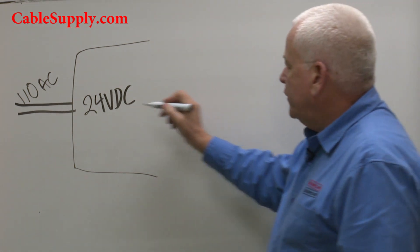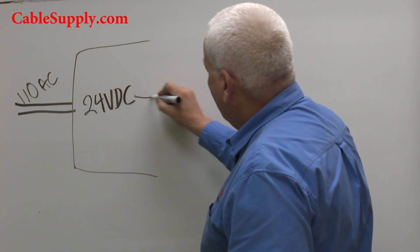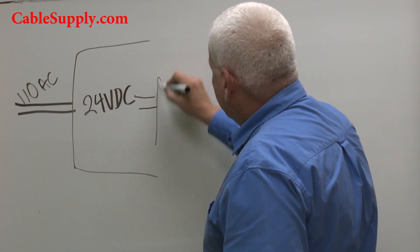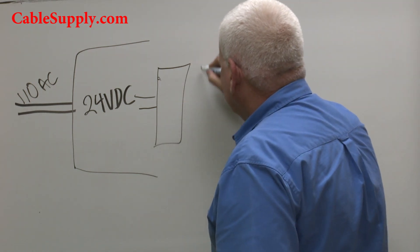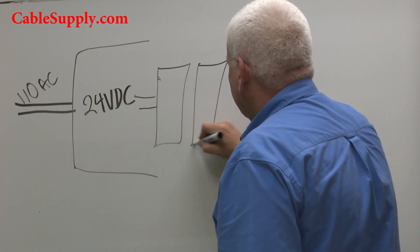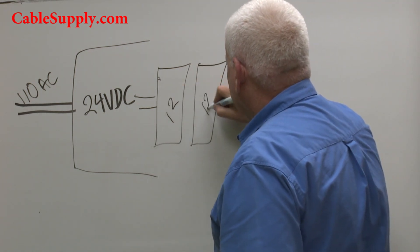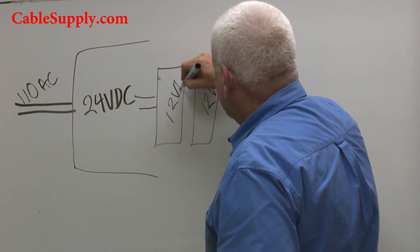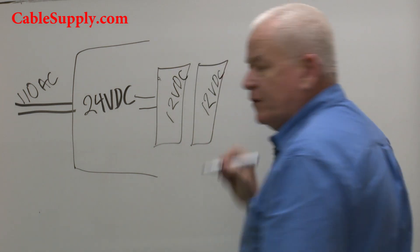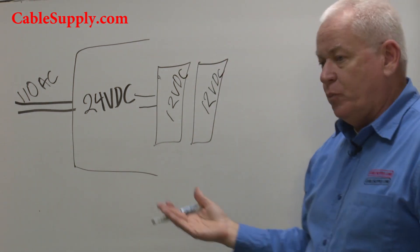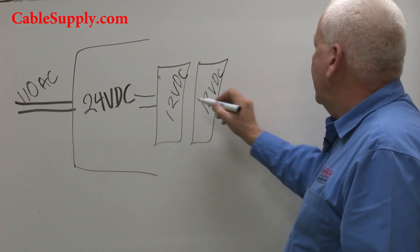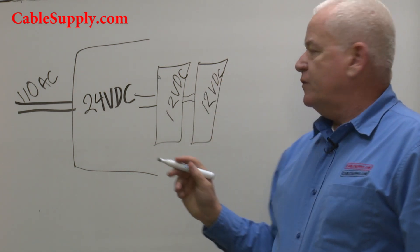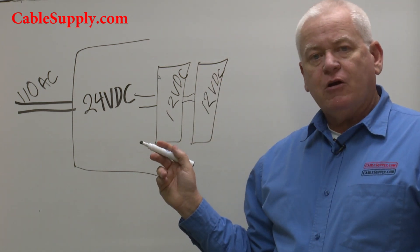Once it converts that, that 24 volts comes out and it goes into, most of the time, two sets of 12 volt batteries—12 volts each DC. Usually when you have batteries, in fact every time I know of, the principle is it's always DC, direct current.